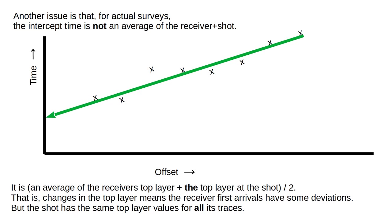Another issue is that, for actual surveys, the intercept time is not an average of the receiver plus the shot. It is an average of the receiver's top layer plus the top layer at the shot, divided by two. That is, changes in the top layer mean the receiver first arrivals have some deviations, but the shot has the same top layer values for all its traces.